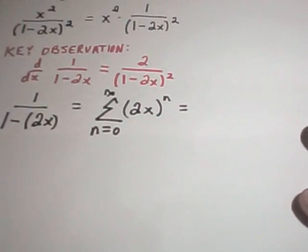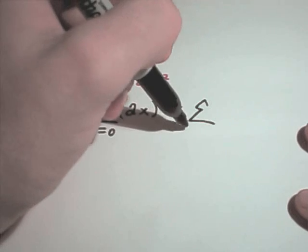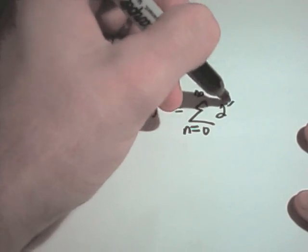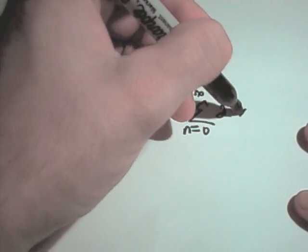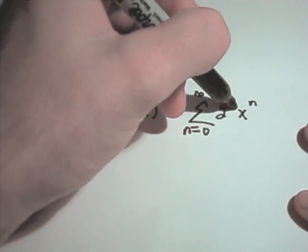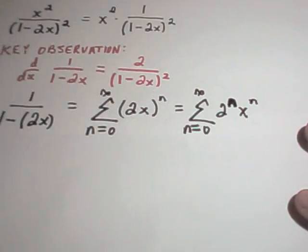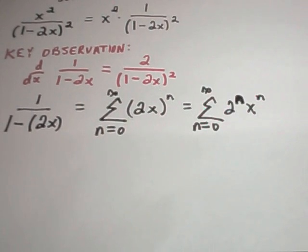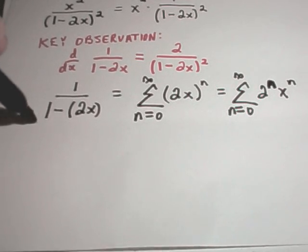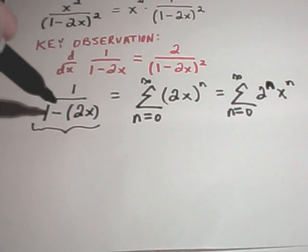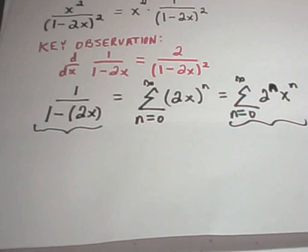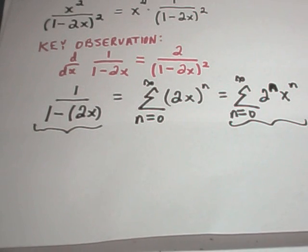If I want to, I could write this simply as the sum from n equals 0 to infinity of 2 to the n times x to the n. So we now know that 1 over 1 minus 2x is equivalent to this series: sum of 2 to the n times x to the n.